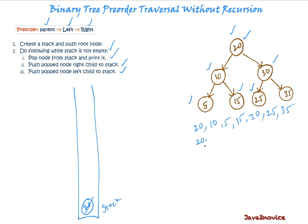We'll print the data and then check does this have any right child or not. It has a right child which is 30, push it to stack. Then does it have any left child? Yes it has. Push it to stack.